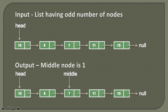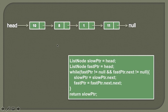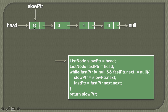Let's move ahead and see the demonstration of how to find the middle node in a singly linked list. First, we'll consider a linked list with an even number of nodes. The linked list has four nodes with values 10, 8, 1, 11, where the head points to the first node, which is 10. Below, you can see the algorithm to find the middle node of a singly linked list. So first, we'll create a node with the name slow pointer and assign the value of head to it, so the slow pointer will point to the first node.